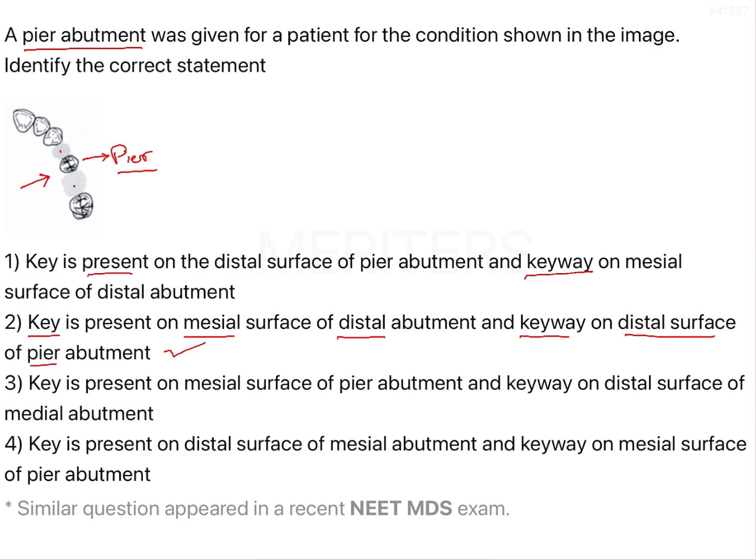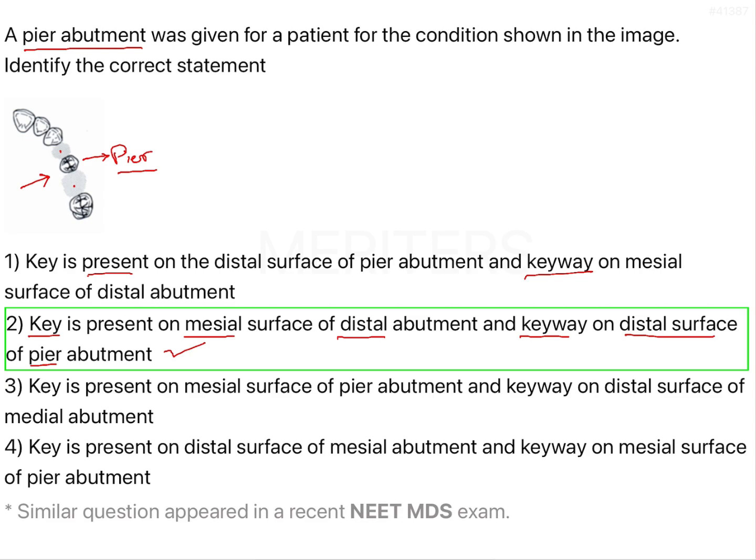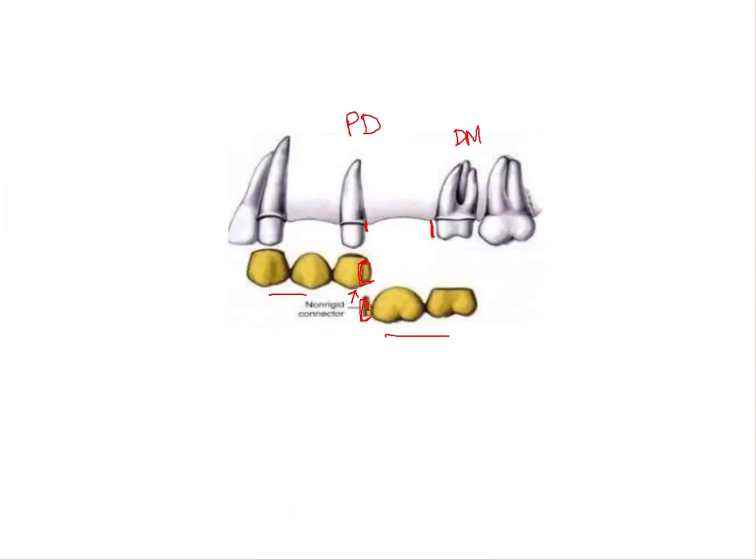Once again let's look at the image so it gets clearer. So have a look again, so this is your distal most abutment, on the mesial surface you have the key, and this is your pier abutment.